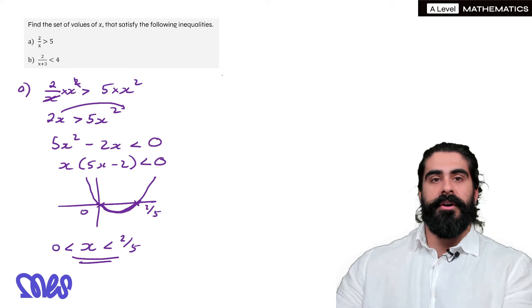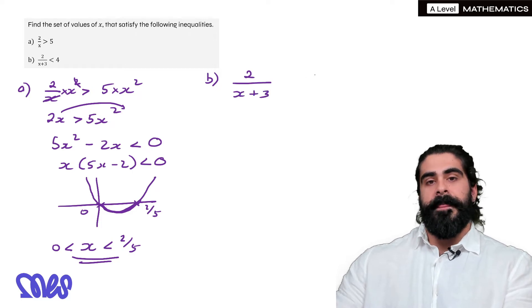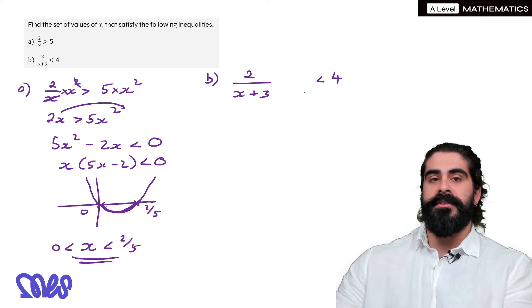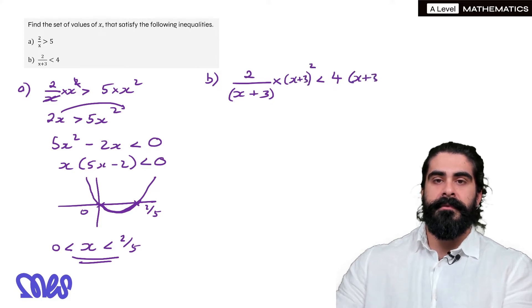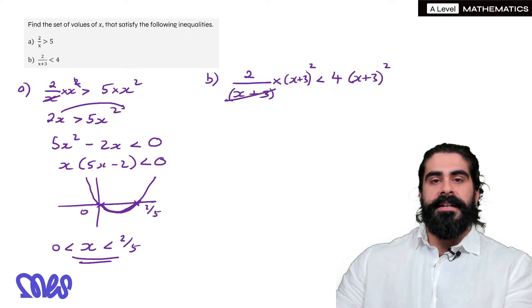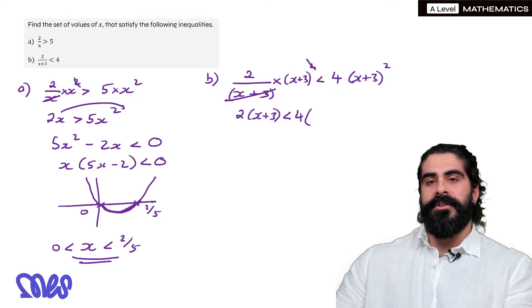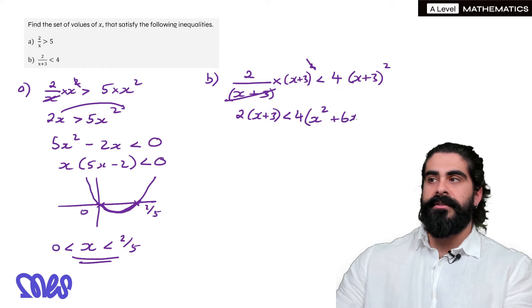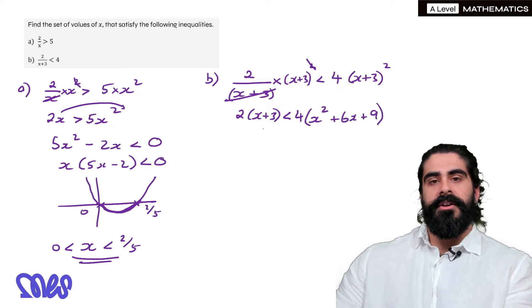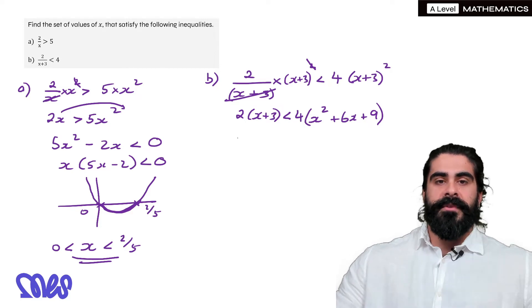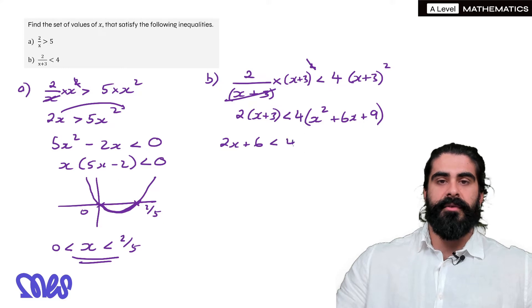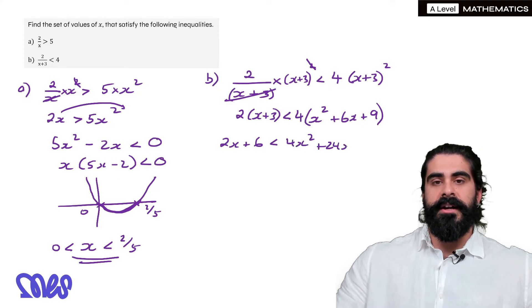Now for part b, how do we do part b? Slightly different. All we do is we register the denominator and say, look, we need to times both sides by that denominator, but we need to make sure it remains positive by squaring. So the x plus 3 cancels with the squared, and we have 2 lots of x plus 3 is less than 4 lots of x plus 3 squared, which we're going to have to expand. I'm going to start doing that, so x plus 3 squared would be x squared plus 6x plus 9. You can actually divide both sides by 2 now, I'm just going to do it after. So we get 2x plus 6 is less than 4x squared plus 24x plus 36.